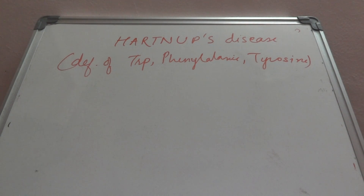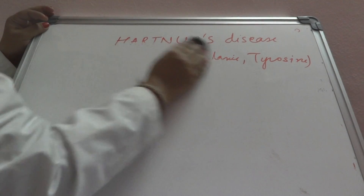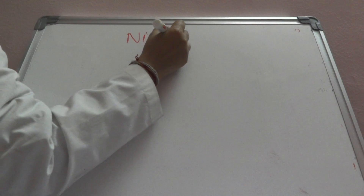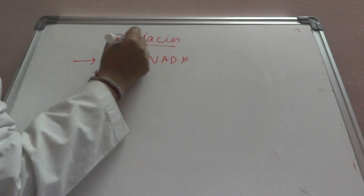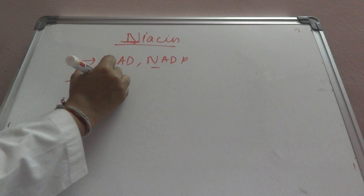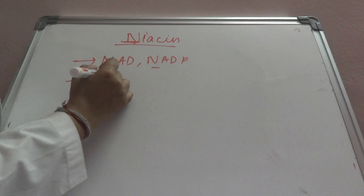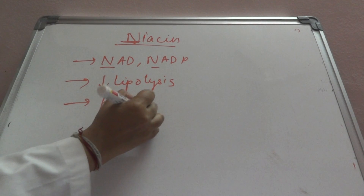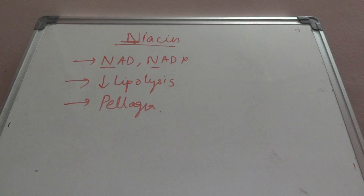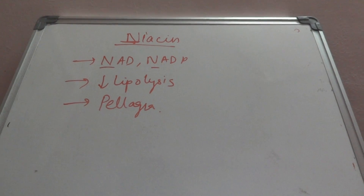Vitamin B3 niacin is most important because it provides us with NAD and NADP, which participate in several metabolic reactions. It is also important because it inhibits lipolysis. The key points to remember: niacin provides NAD and NADP, it decreases lipolysis, and its deficiency causes pellagra. Thank you.